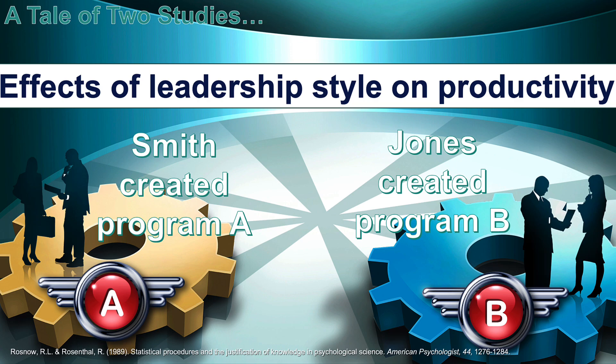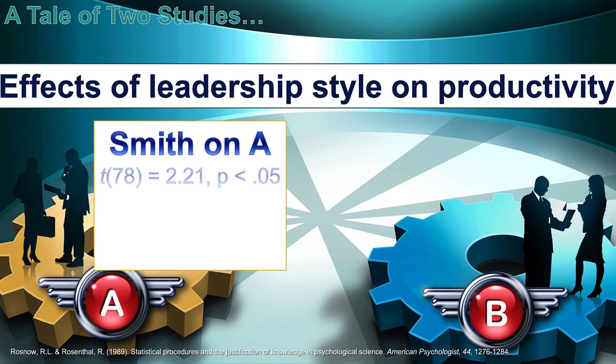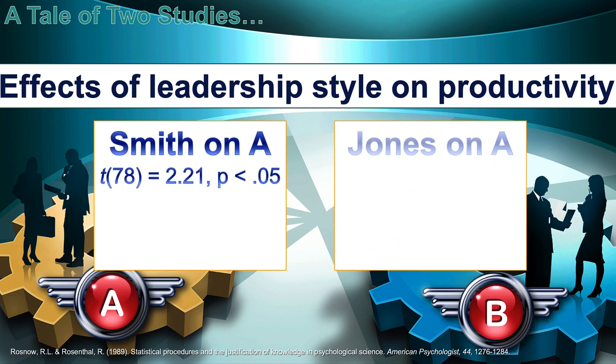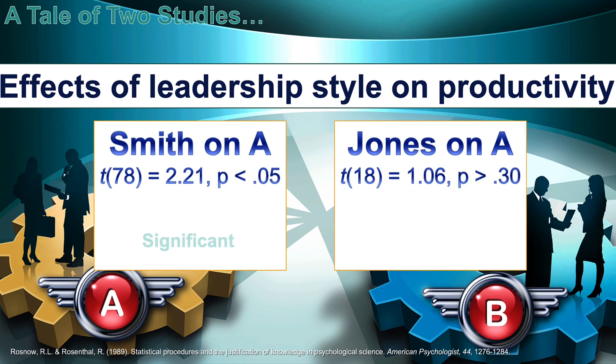Smith had originally demonstrated that workplace teams led by leaders trained with his program had higher productivity: t with 78 degrees of freedom equals 2.21, p less than .05 — statistically significant.